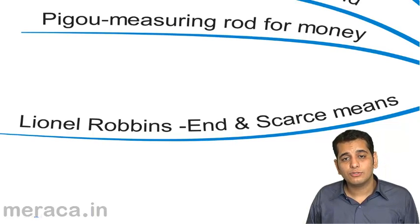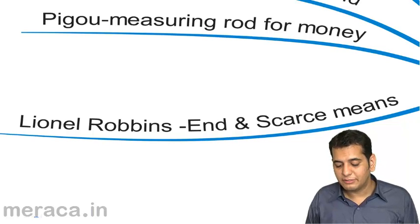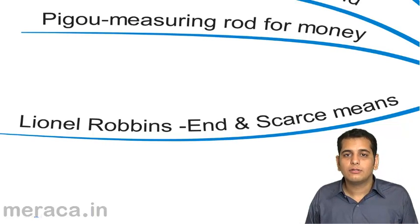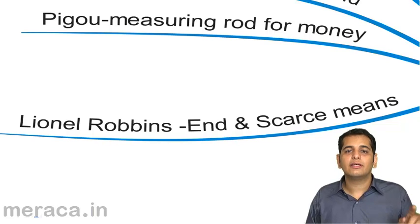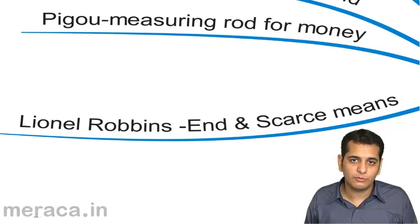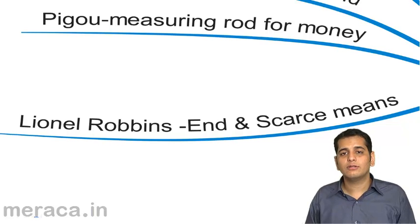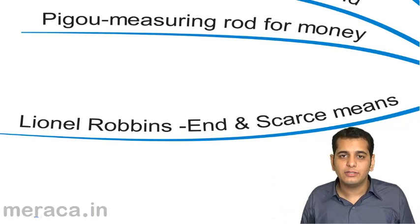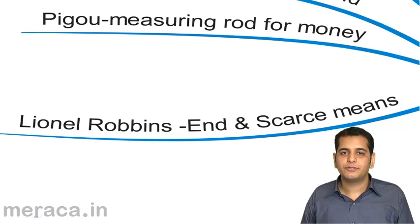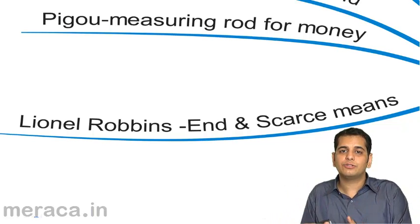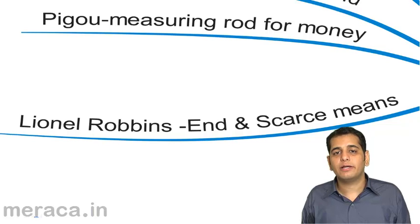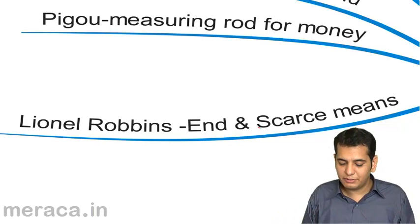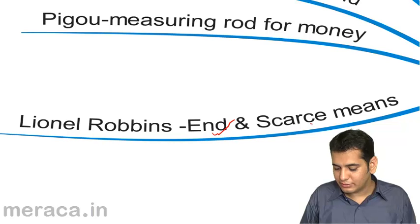Professor Lionel Robbins also gave us a definition. He gave us the definition of choice making, the definition of scarcity, the definition of problem solving in economics. How do we solve the problems in economics? By striking a balance between unlimited wants and limited resources. By making a choice as to which resource is to be applied to satisfy which one. He gave us a definition giving a relation between ends and scarce means.